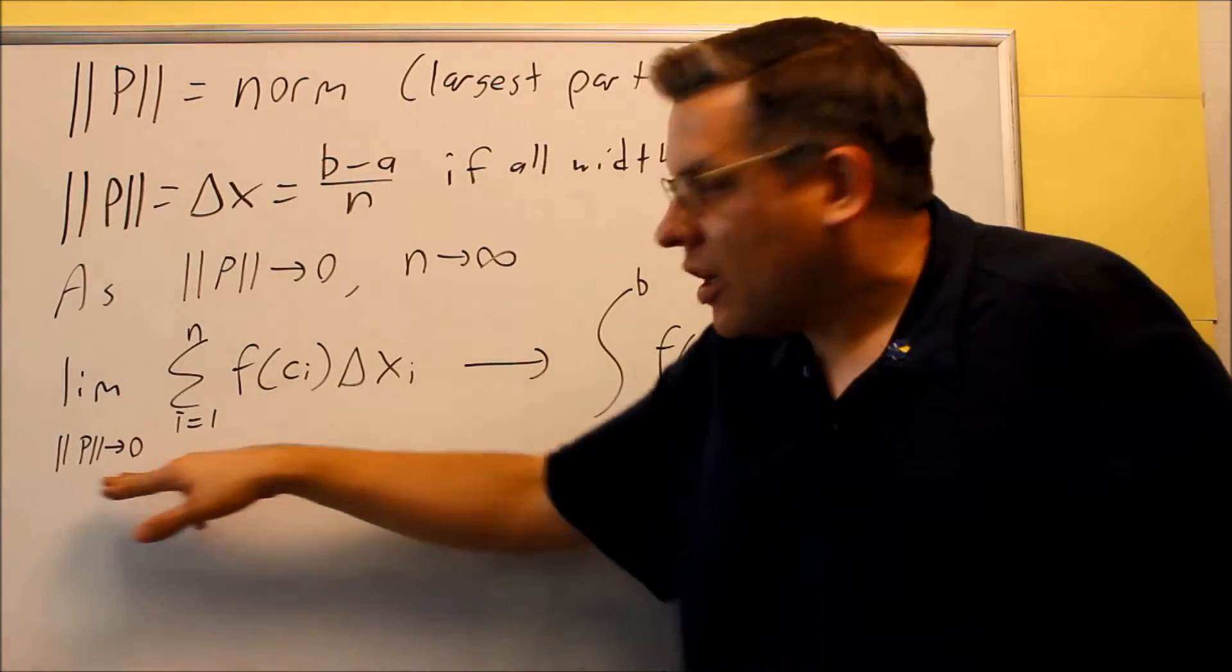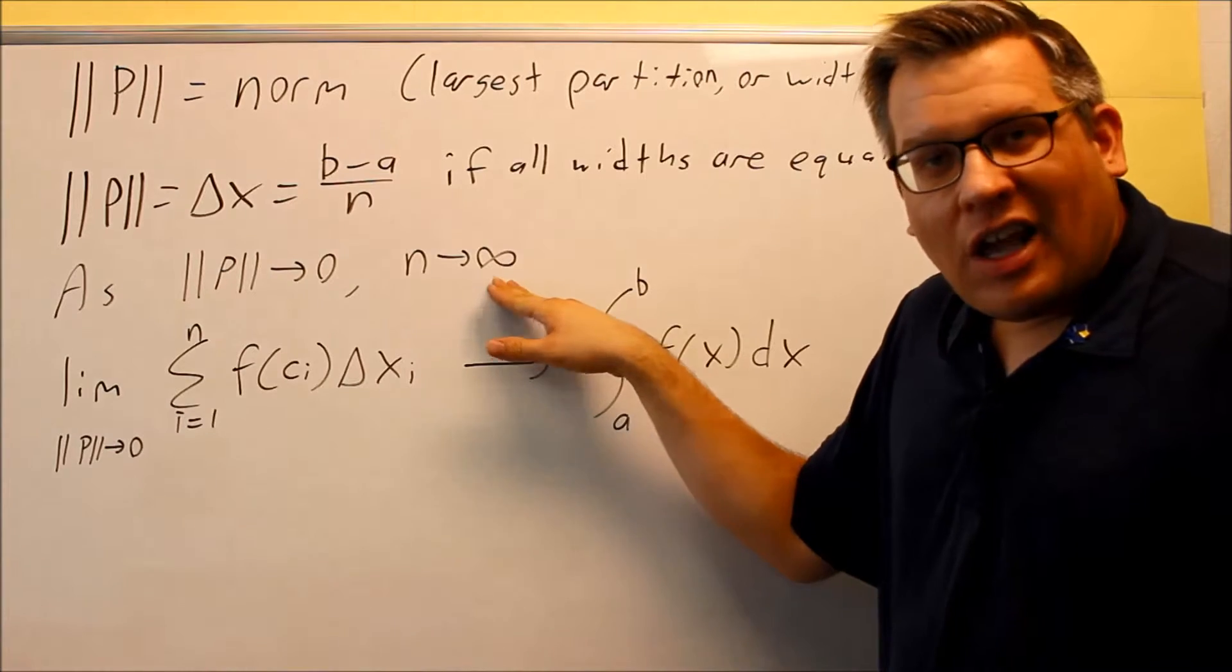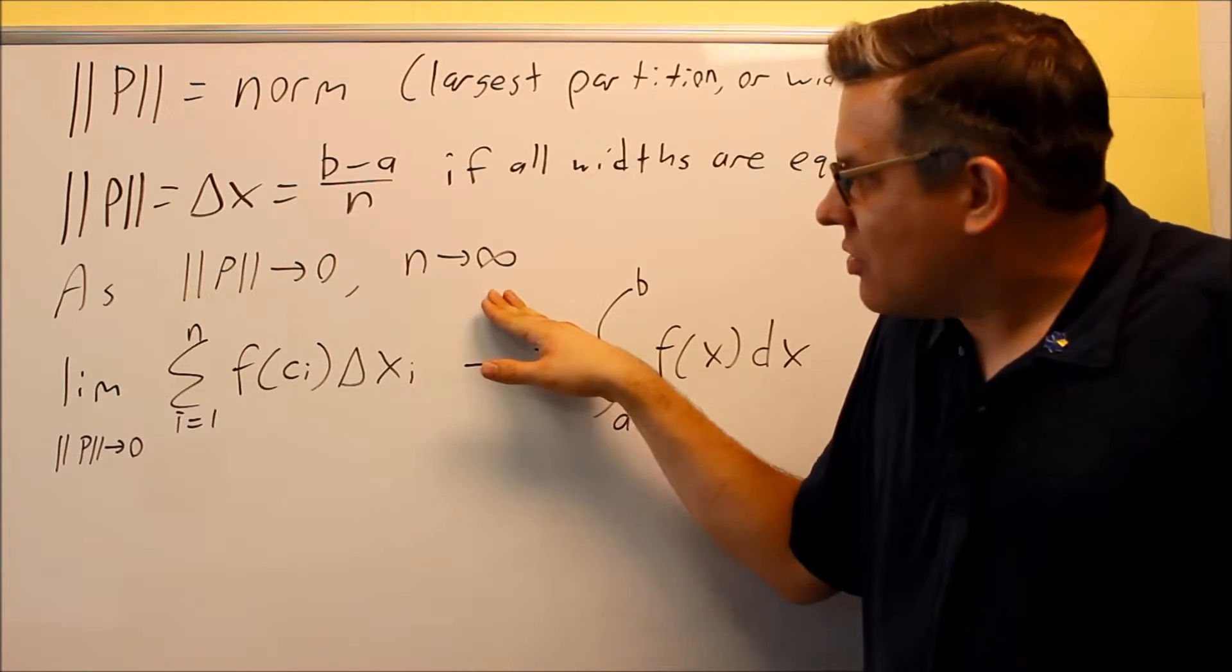We can just say that, okay, as norm goes to zero, we can assume now that n is going to go to infinity. The number of rectangles is going to be infinite.